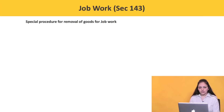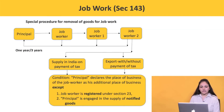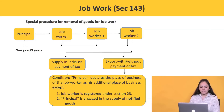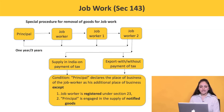To summarize the procedure: the principal may send goods to a job worker and from there to another job worker without payment of tax — for one year in the case of inputs and three years in the case of capital goods. From there, the principal may supply in India on payment of tax, or export with or without payment of tax, subject to the condition that the principal declares the job worker's place of business as his additional place of business, except where the job worker is registered under Section 25 or the principal is engaged in the supply of notified goods. Till date, no such goods have been notified by the government.